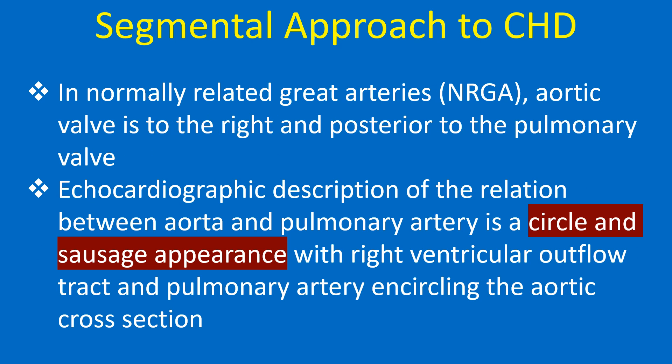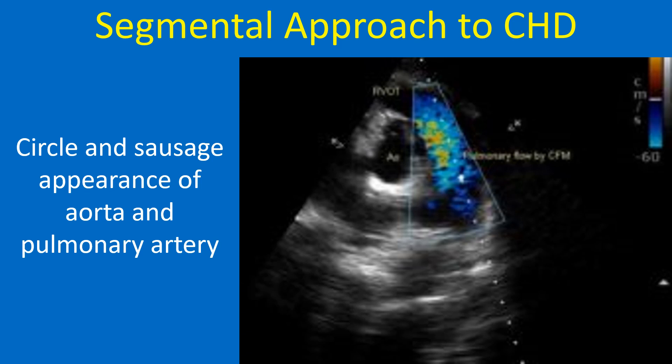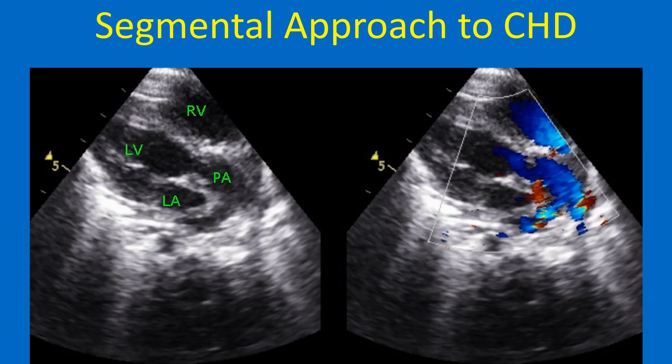In normally related great arteries, the aortic valve is to the right and posterior to the pulmonary valve. The echocardiographic description of the relation between aorta and pulmonary artery is a circle and sausage appearance, with the right ventricular outflow tract and pulmonary artery encircling the aortic cross section in the parasternal short axis view. In dextro-transposition of great arteries, the great vessels are almost parallel and the arrangement is called the two circles appearance. The aorta and pulmonary artery are identified by their arch and bifurcation respectively on tracing distally. The pulmonary artery arising from the left ventricle is seen as the bifurcating vessel on echocardiogram in a modified parasternal long axis view in TGA.